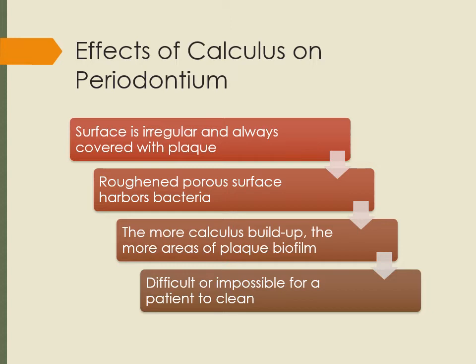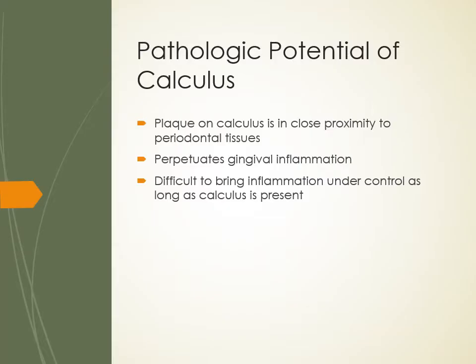The effects of calculus on the periodontium: the surface is very irregular and always covered with plaque. The roughened, porous surface harbors bacteria. The more calculus build-up, the more areas of plaque biofilm. Once calculus is there, it's very hard for patients to clean around it — they can't get underneath and clean the sulcus the way they used to. The pathological potential: plaque on the calculus is in close proximity to periodontal tissues, causing gingival inflammation that is very difficult to bring under control as long as the calculus is there.